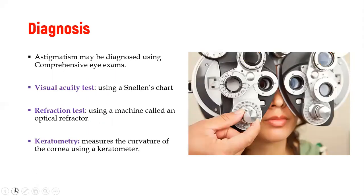So diagnosis, basically, astigmatism is done through comprehensive eye exam. So the first test is visual acuity tests using a simple Snellen's chart. And I would be able to see distorted or blurred figures on the Snellen's chart. Then there's a refraction test that is done using a machine that is called the optical refractor. And we have keratometry, which measures the curvature of the cornea. And the instrument that is used to do that is a keratometer.